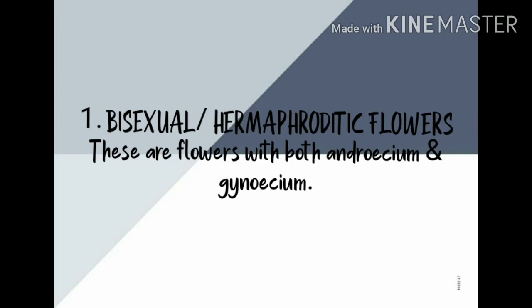We learned in biology that an earthworm is a hermaphrodite — that means an earthworm has both its male and female reproductive organs in a single organism. Likewise, a bisexual flower possesses both the male and female reproductive organs in itself. A single flower holds both of these. The female reproductive organ is the gynoecium and the male reproductive organ is the androecium.